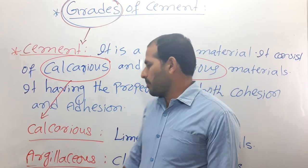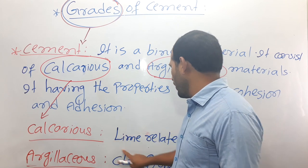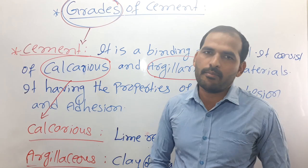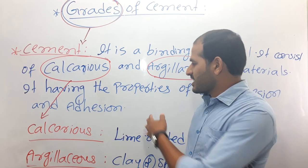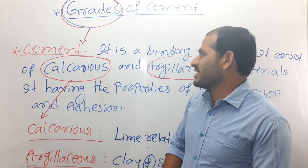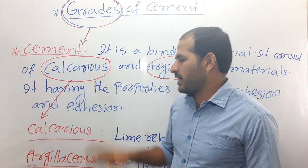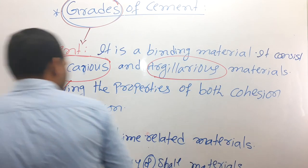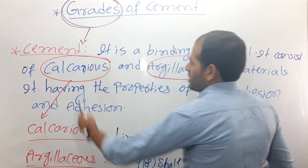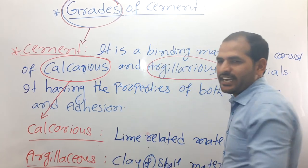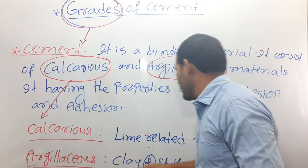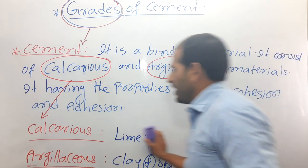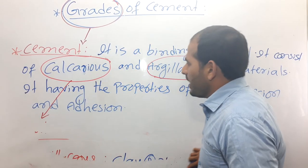Before the manufacturing process of cement was developed, lime was used for all types of construction. Lime is the major ingredient in cement, as calcareous material — which is lime-related — is a key component.